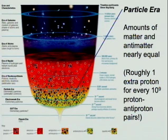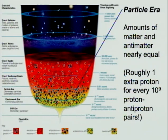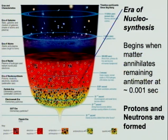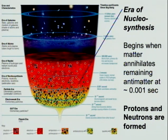Then there is the particle era — that's when protons start to form. All the matter and antimatter annihilate, and we start to have particles form. After that, as the universe cools down more, the nuclei start to combine into atoms. This is what we call the era of nucleosynthesis — a very small but very important era, because that's when protons and neutrons combine together to start to form atoms. We continue to form elements after that.